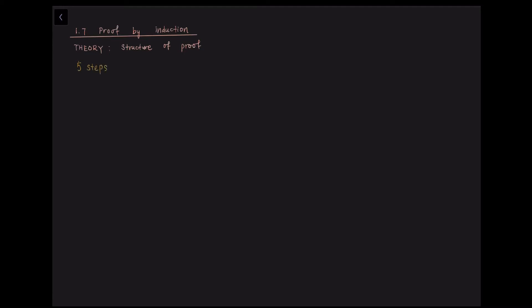The first step is, we want to define the proposition. And the proposition, we always write it as P(N). And the second step is to prove P(R) where R equals to 1.